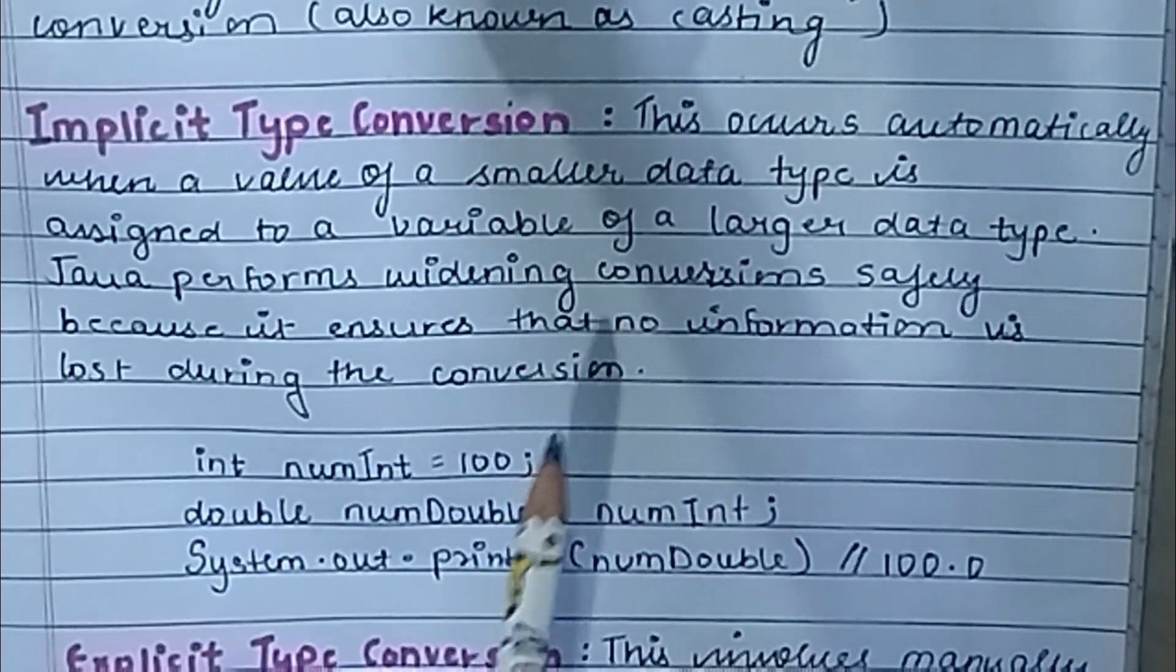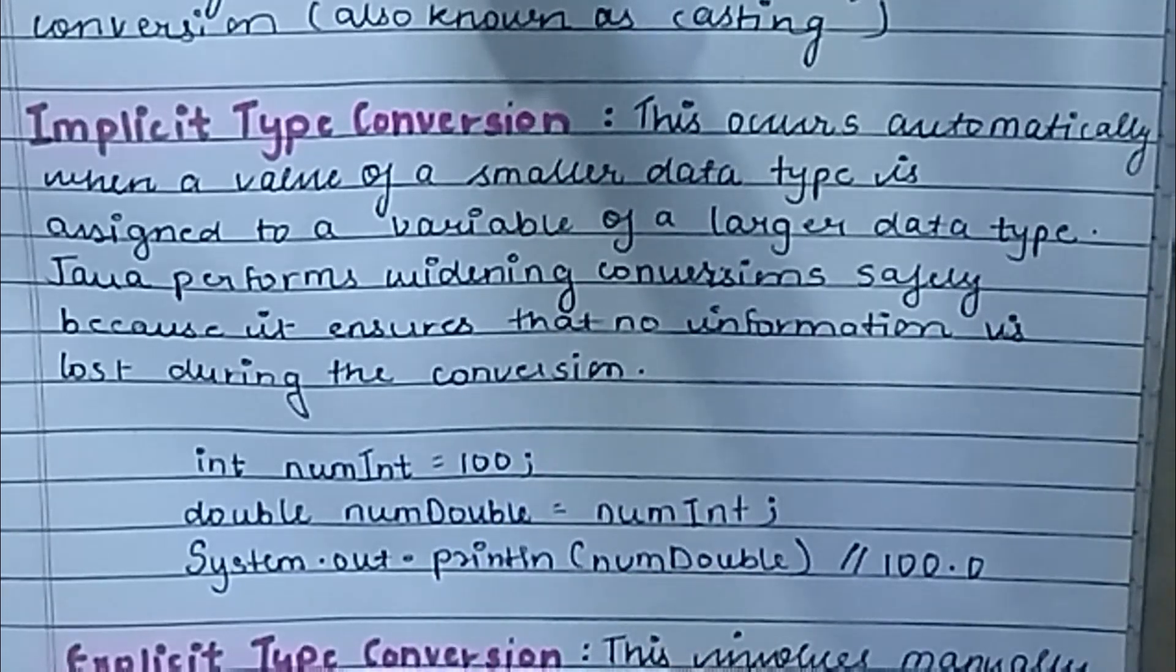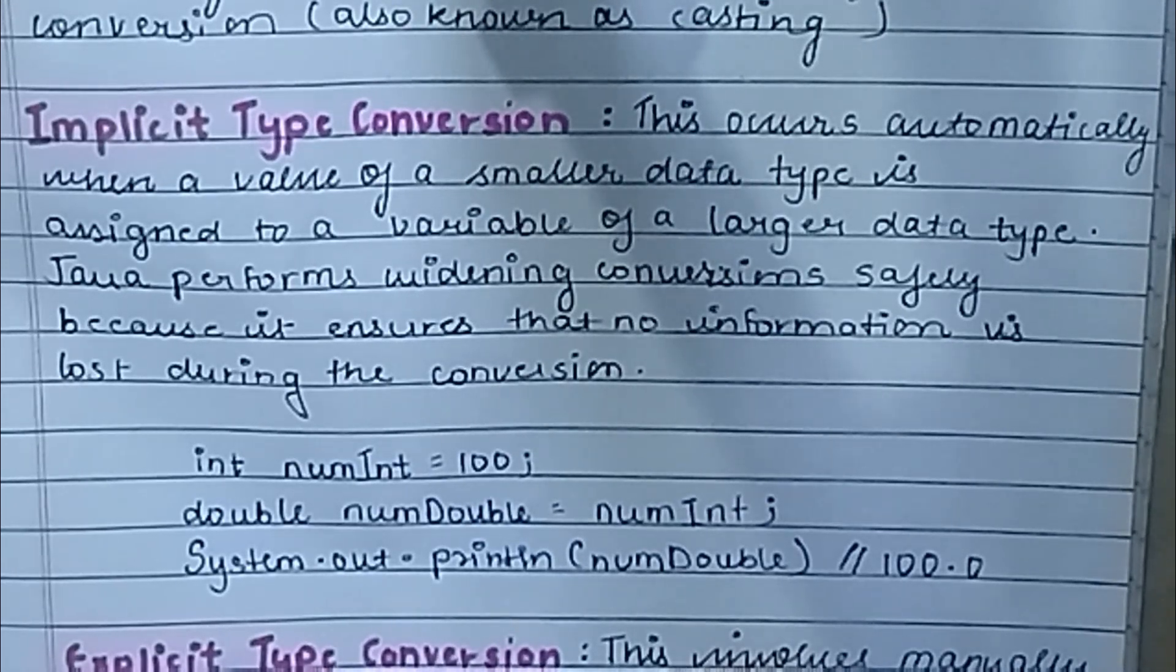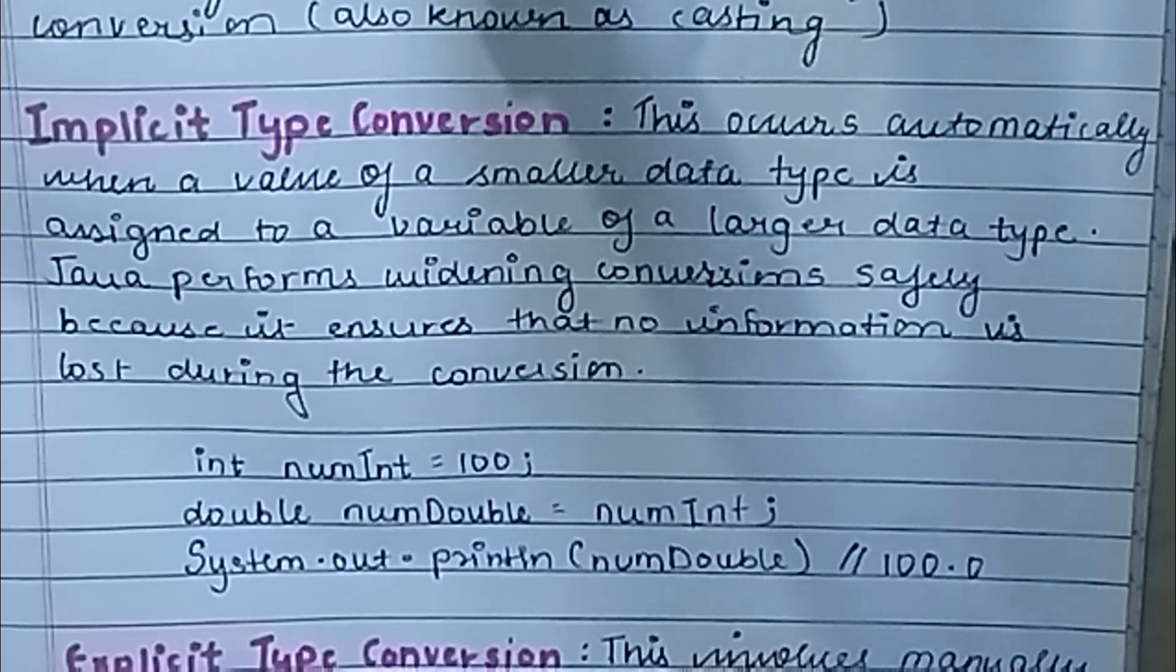Implicit typecasting is used when a small data type with a smaller range is converted. For example, if we save an int value in a double, it will not be lost because int capacity is less than double. So the int value can go into double. This is implicit conversion.